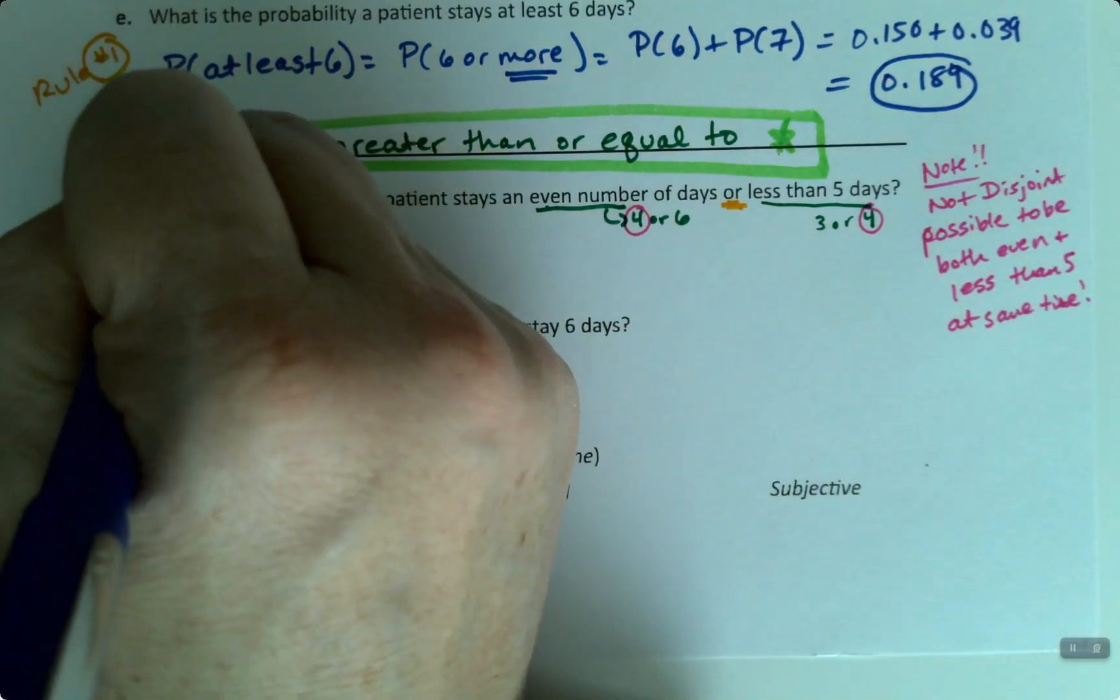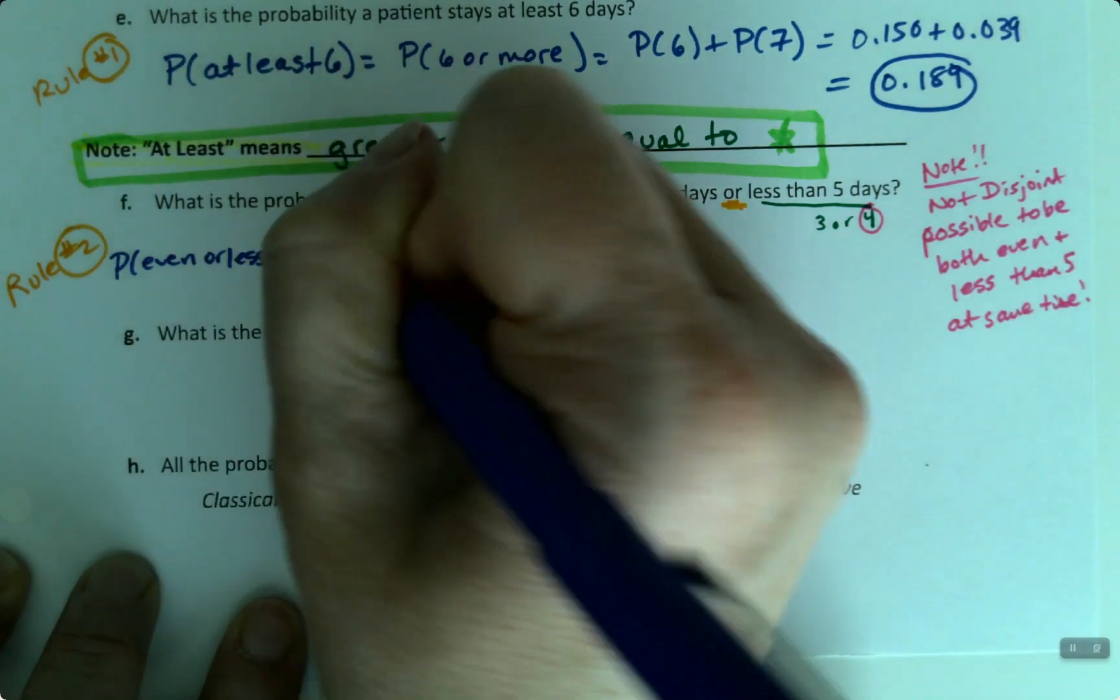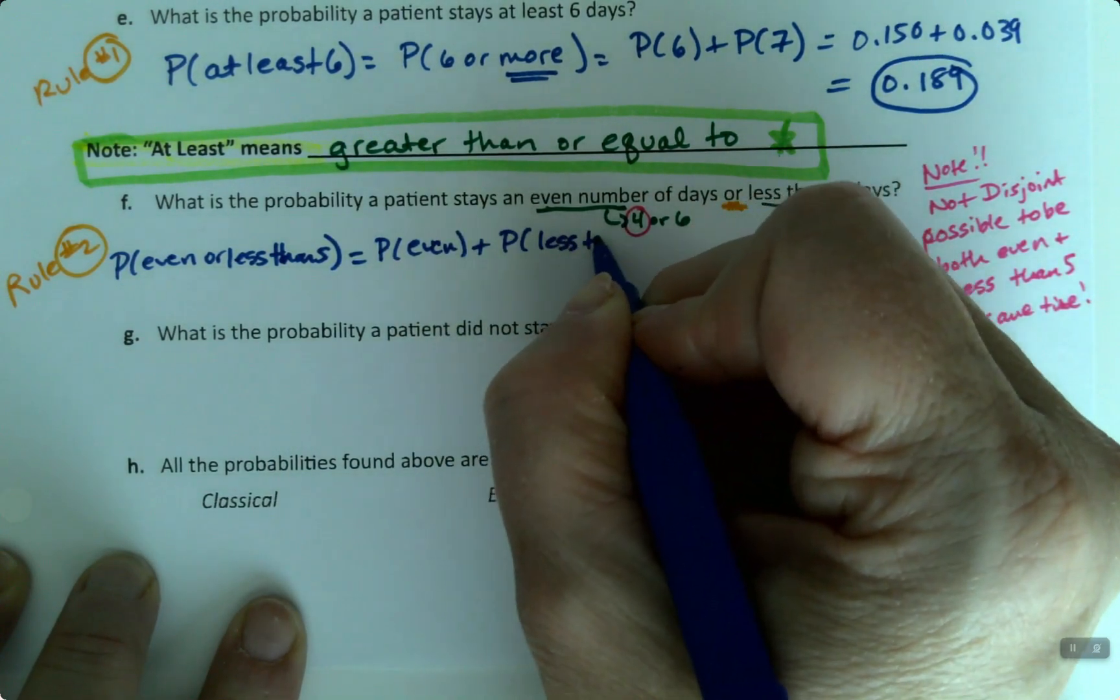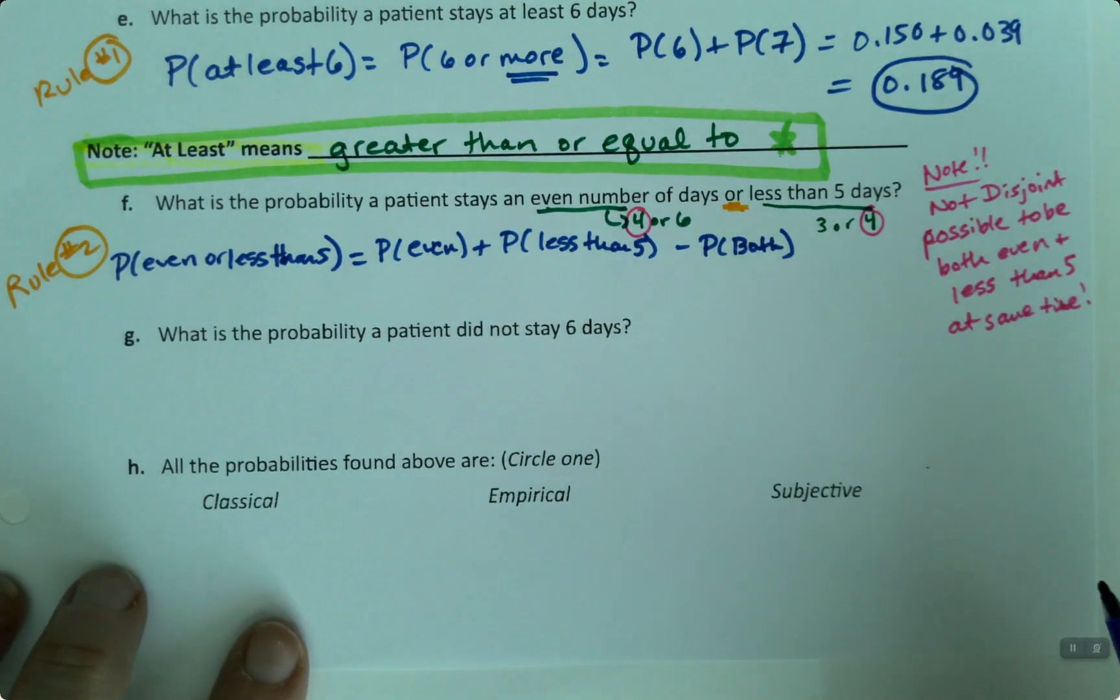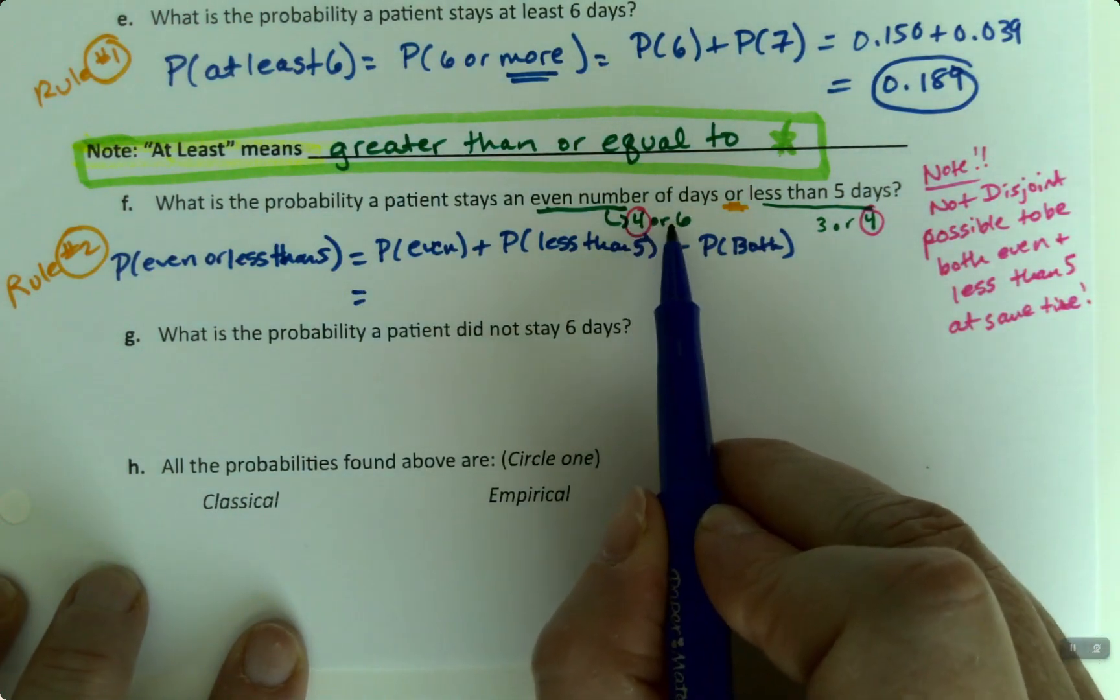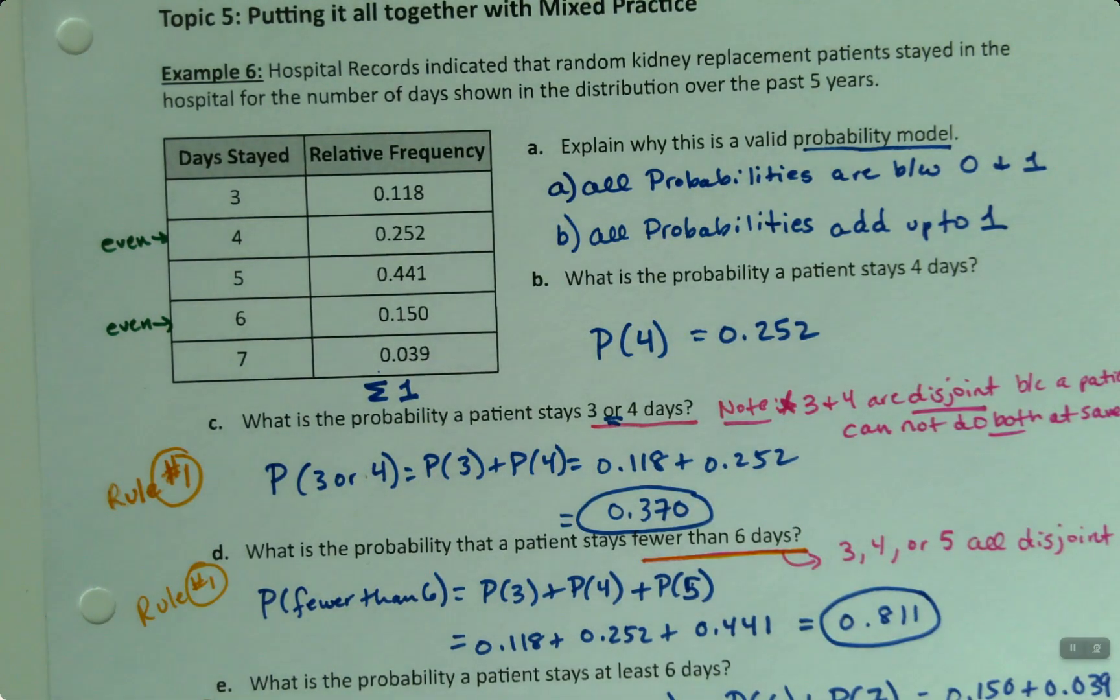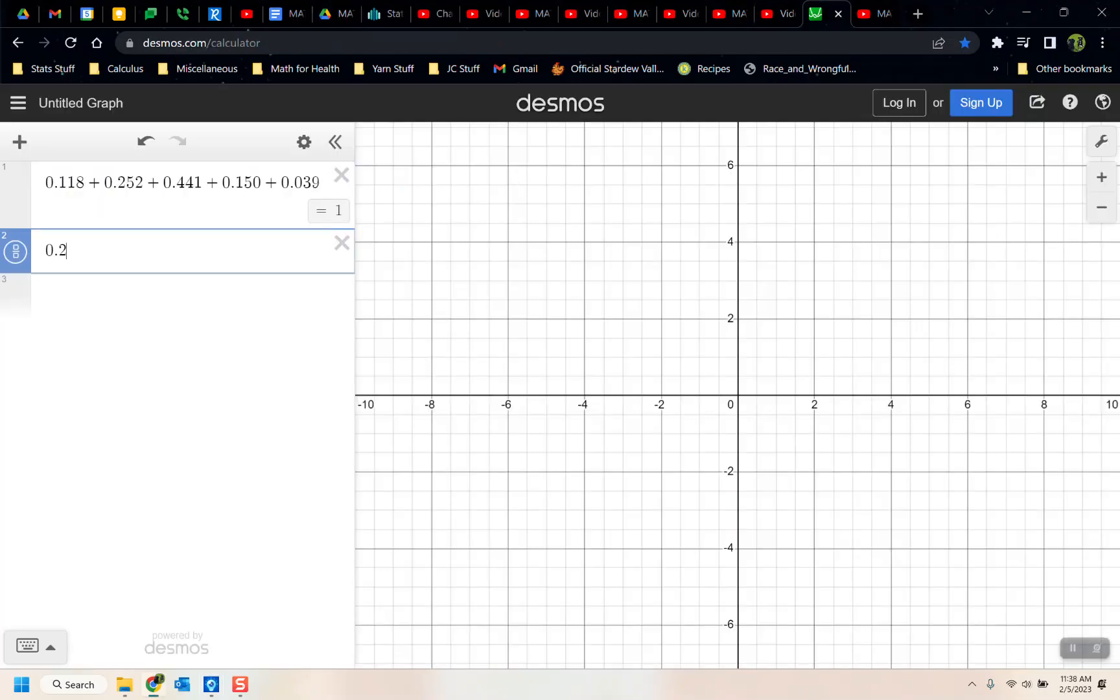So the probability of even or less than five is the probability of even plus the probability of less than five minus the probability of both at the same time. Evens, four and six. A four and a six. I want to go add those up, right? So I'm going to take four and six and add them up. So zero point two, five, two plus zero point one, five, oh is four, oh two.